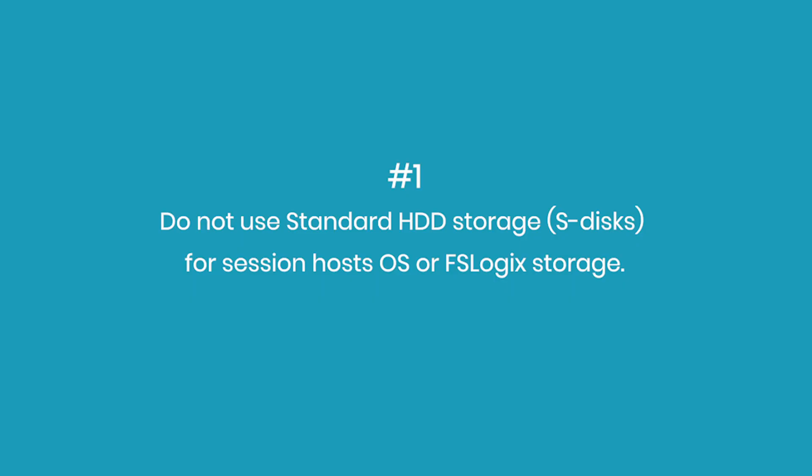Here are some best practices and recommendations that should help improve disk performance and therefore overall end-user performance in WVD. Number one: do not use standard HDD or S-type disks either for the session host VM OS disk or for the storage where the FSLogix profiles are stored. Those generally have a fairly inconsistent throughput and a low number of IOPS, and are likely going to cause disk contention and slow user performance.